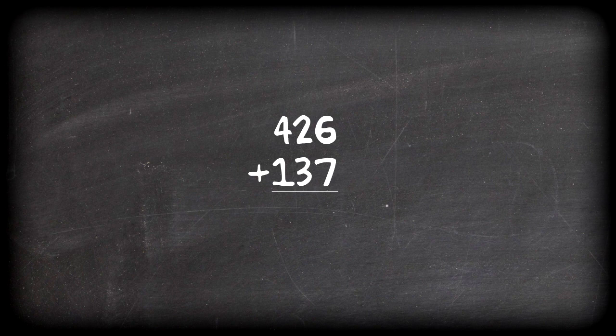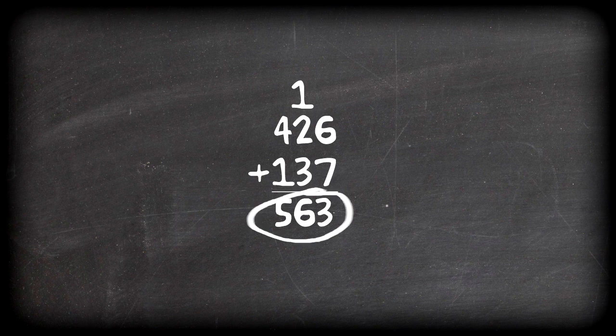Let's say you wanted to add 426 to 137. When math was simple, you would add 6 to 7 and get 13, carry the 1, add 2 and 3 and the 1 to get 6, then add 4 and 1 to get 5 for a total of 563.